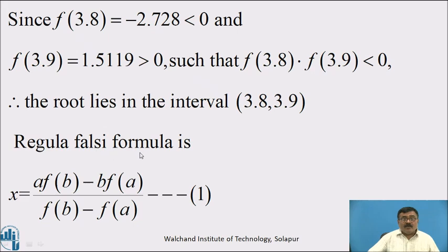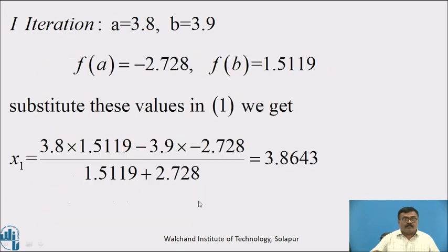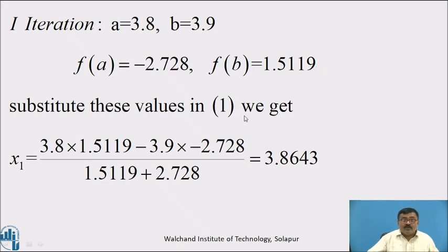By the Regula Falsi formula: x = [a·f(b) − b·f(a)] / [f(b) − f(a)] — call it equation 1. First iteration: here a = 3.8 and b = 3.9, f(a) = −2.728 and f(b) = 1.519. Substituting these values in equation 1 and simplifying, we get x₁ = 3.8643.